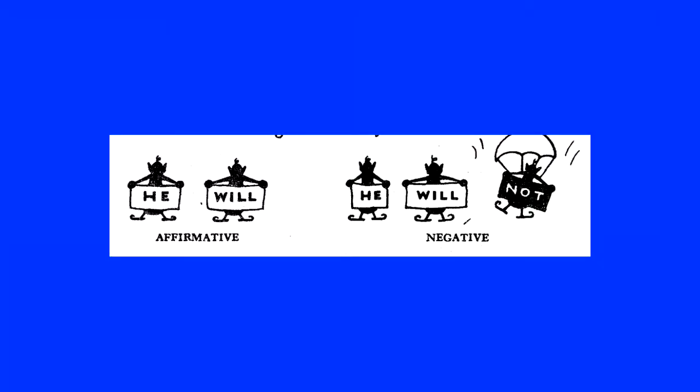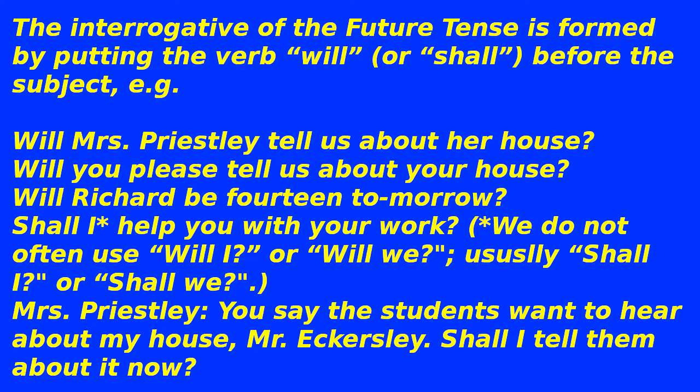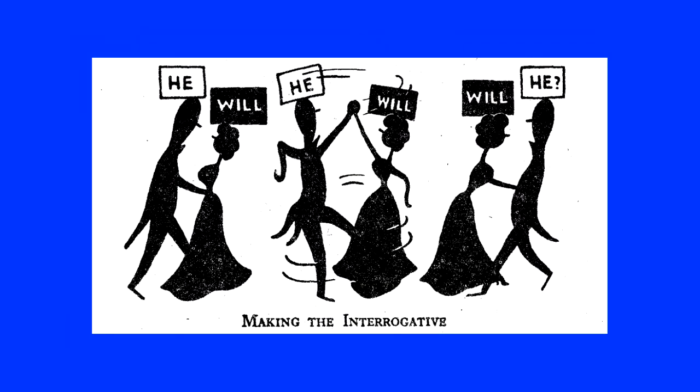He will (affirmative). He will not (negative). The interrogative of the future tense is formed by putting the verb 'will' or 'shall' before the subject. E.g.: 'Will Mrs. Priestley tell us about her house?'; 'Will you please tell us about your house?'; 'Will Richard be 14 tomorrow?'; 'Shall I help you with your work?' We do not often use 'will I', 'will we', or indeed 'shall I' or 'shall we.' Mrs. Priestley said: 'The students want to hear about my house, Mr. Eckersley. Shall I tell them about it now?'